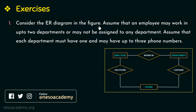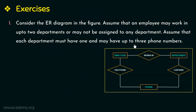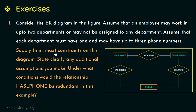Consider the ER diagram in the given figure. Assume that an employee may work in up to two departments or may not be assigned to any department. Also assume that each department must have one and may have up to three phones. They are asking us to supply min-max constraints on this given diagram and to state clearly any additional assumptions you make.